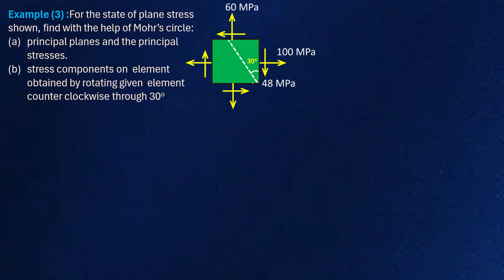Let me first name the planes. I am going to call this point as point A, this point as point B, and this point as point C. We have plane AB, which has normal stress 100 MPa and shear stress 48 MPa. Plane CB has normal stress 60 MPa and the shear stress is also 48 MPa.